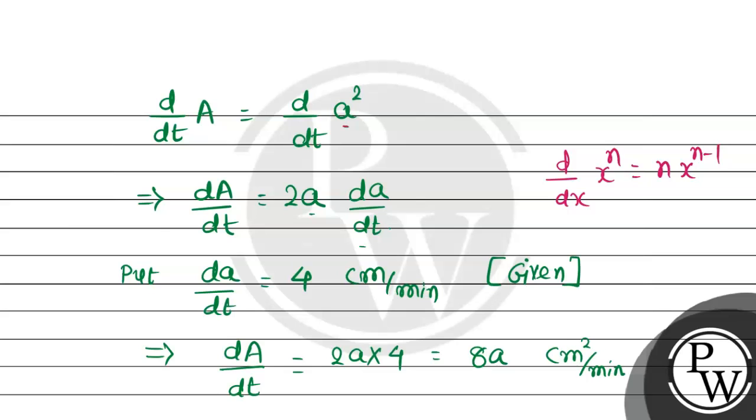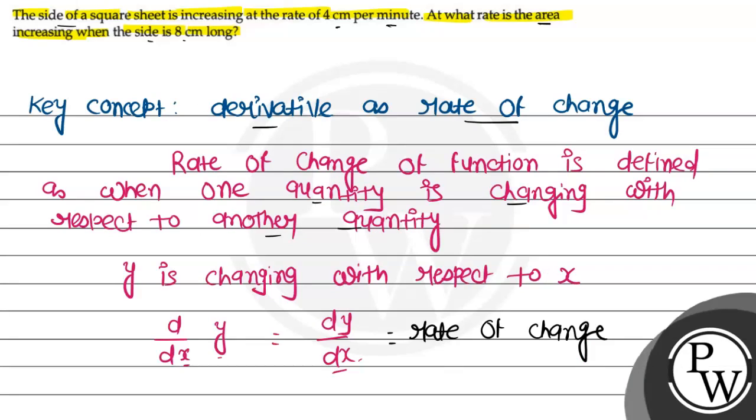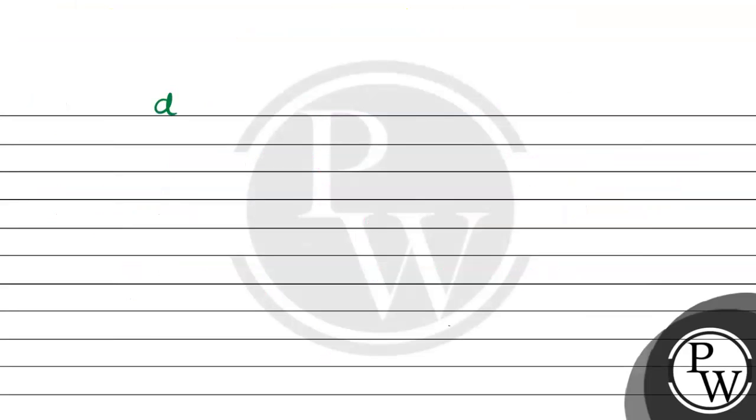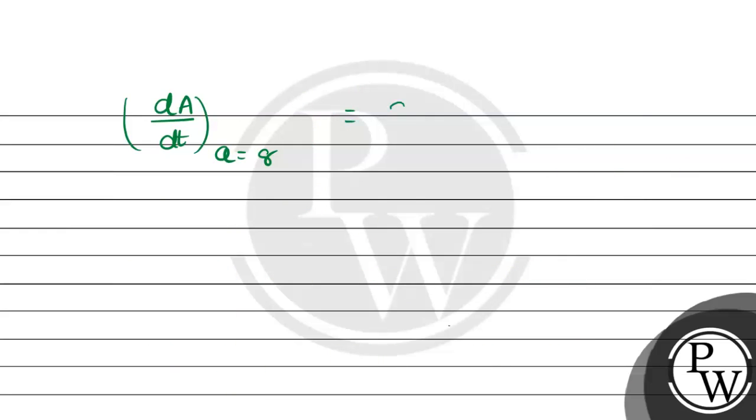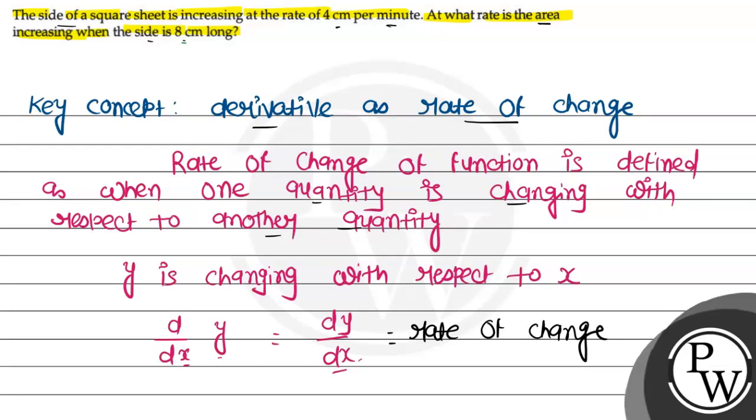But we need to find dA/dt, the rate of area, when a is 8 cm. So dA/dt when a = 8. Our equation is 8a, so this will be 8 × 8 = 64 cm² per minute. This is our required rate when the side is 8 cm.